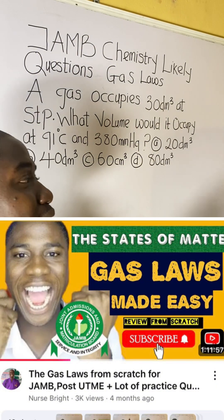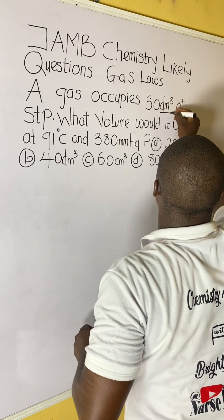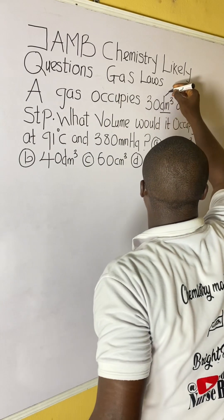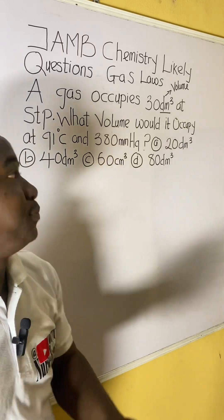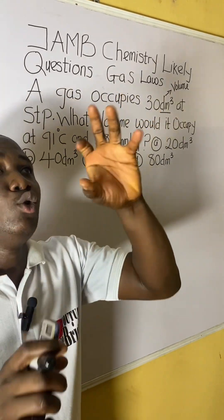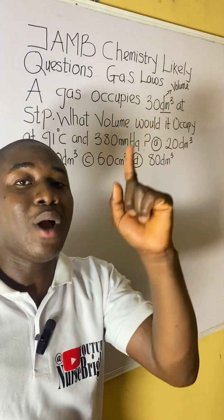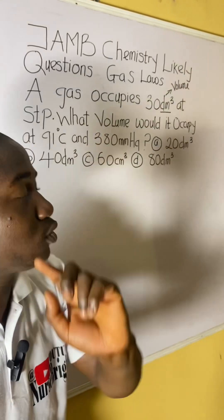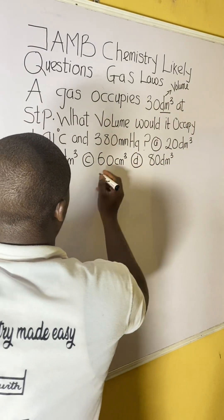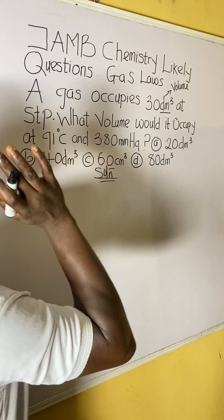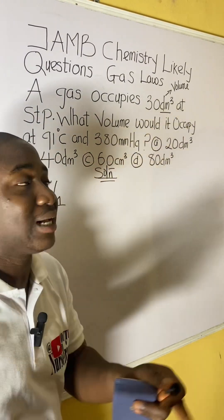The question says a gas occupies 30 dm³. Any number that ends with dm³ is volume. Now here is a trick for solving gas law questions: whenever you see a parameter first — be it volume, pressure, or temperature — allocate subscript 1 to that number. Since 30 dm³ is the first volume mentioned, it becomes V1 = 30 dm³.